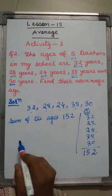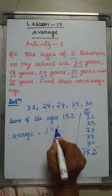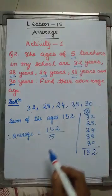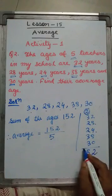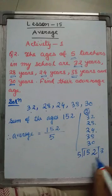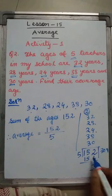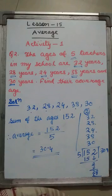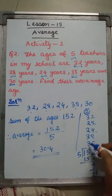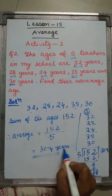The sum is 152 years. How many teachers? 5 teachers. Therefore, average is 152 divided by 5. If I divide 152 by 5, it is 3 times 5 is 15, 2 will come down, not divisible, so 0, bring 2 again, put a decimal, 4, and 5 into 4 is 20. So the average is 30.4. Divide the sum by the number of values and you get the answer — average is 30.4 years.